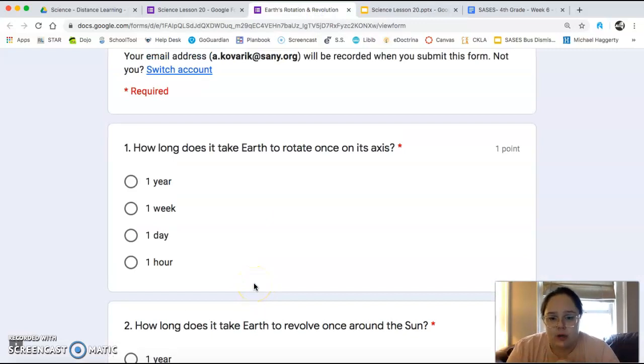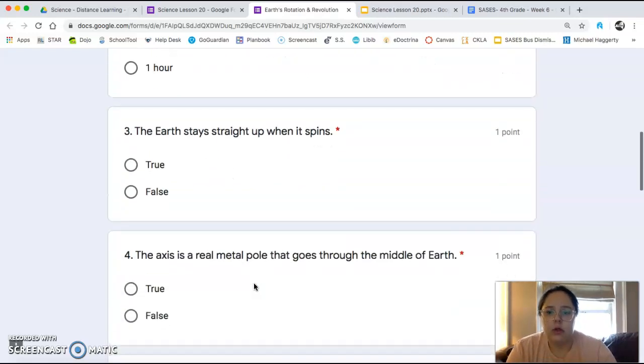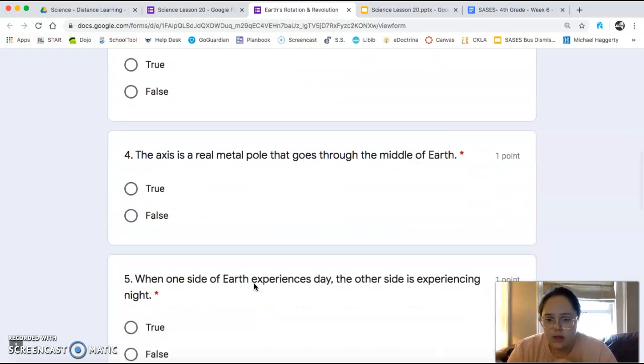Number one, how long does it take Earth to rotate once on its axis? Two, how long does it take Earth to revolve once around the sun? True or false, the Earth stays straight up when it spins. The axis is a real metal pole that goes through the middle of the Earth. True or false?